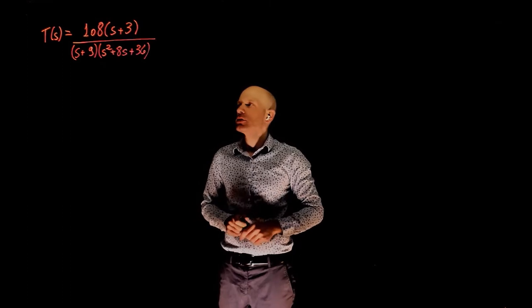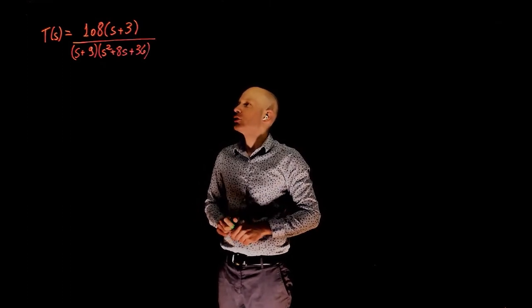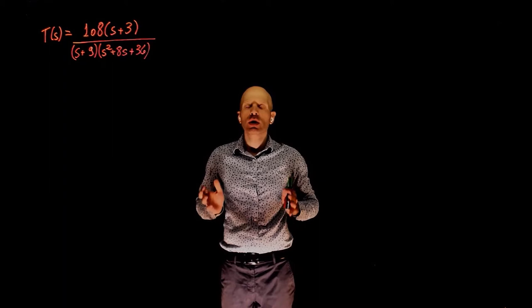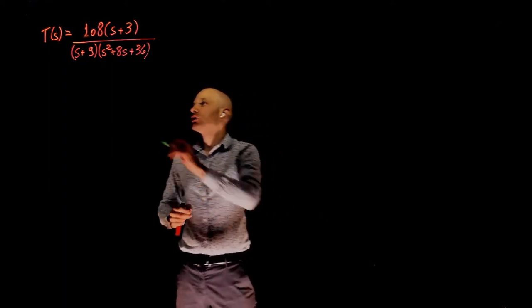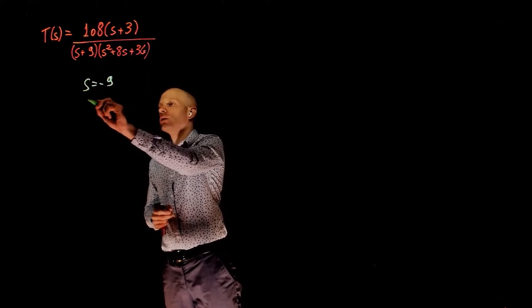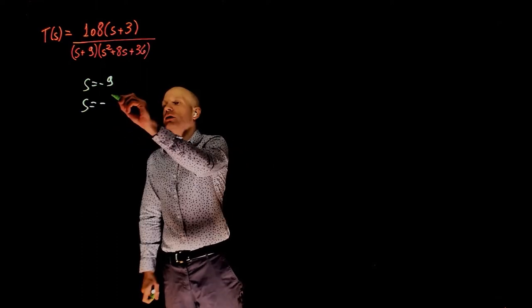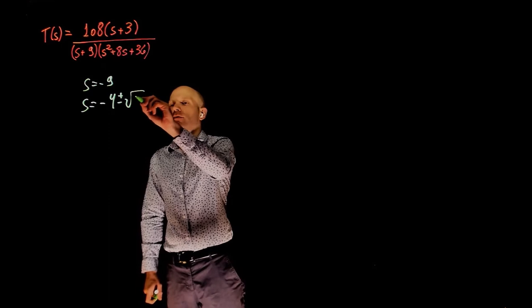In the second part of this exercise, the objective is to find the percent overshoot and settling time considering only the complex dominant poles. The poles of this transfer function are negative 9 and minus 4 plus minus square root of 5j.